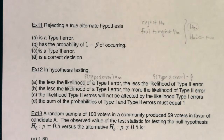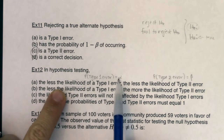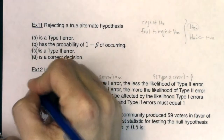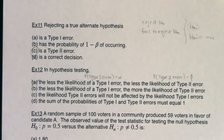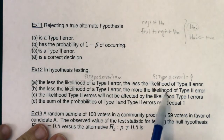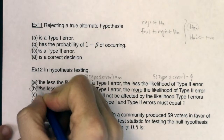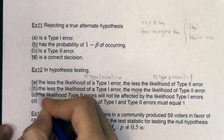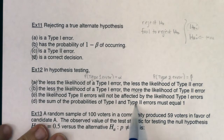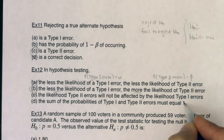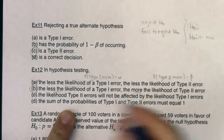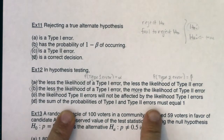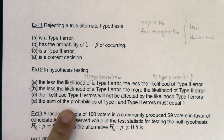So let's piece together the answer. The less the likelihood of type 1, so as alpha goes down — is it true that beta goes down? That is not the relationship. As one goes down, the other goes up. So: the less the likelihood of a type 1 error, the more the likelihood of a type 2 error. That's the true sentence. The claim that type 2 errors are unaffected by type 1 errors is false, and the claim that the probabilities of type 1 and type 2 errors must sum to 1 is also false — that would mean you'd always make an error. The only true sentence is answer B.